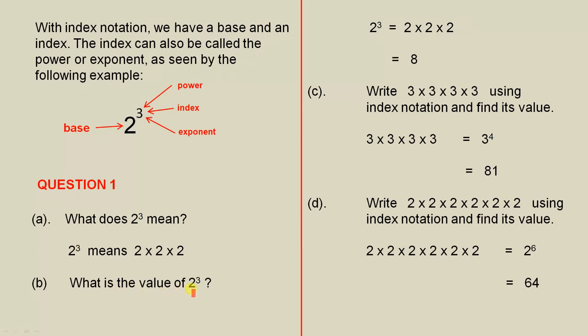So what is the value of 2 cubed? Well, as we saw, 2 cubed equals 2 times 2 times 2. 2 twos are 4, 4 times 2 is 8. So the value of 2 cubed is 8.